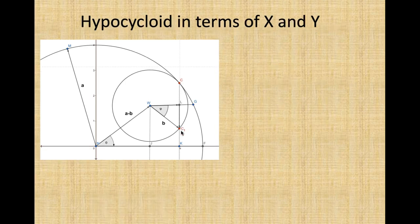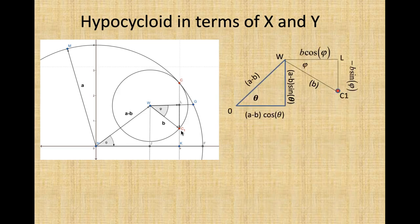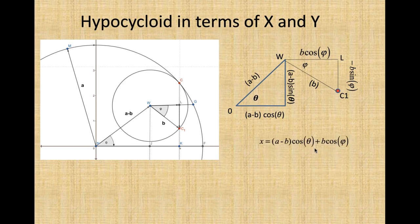Let's continue. Now I've drawn these three triangles out here. So we have theta and we have phi. (A minus B) cosine theta is x-direction plus B cosine phi, so we locate C1. Y equals (A minus B) sine theta, (A minus B) sine theta, minus B sine phi. So that's how we locate C1.